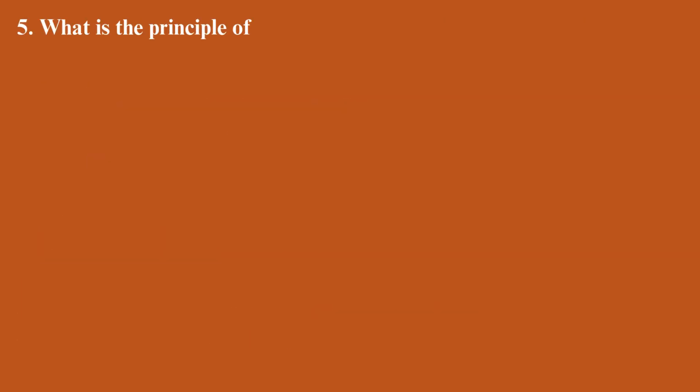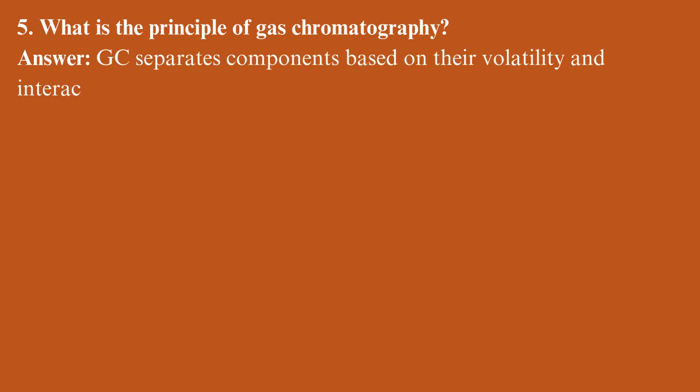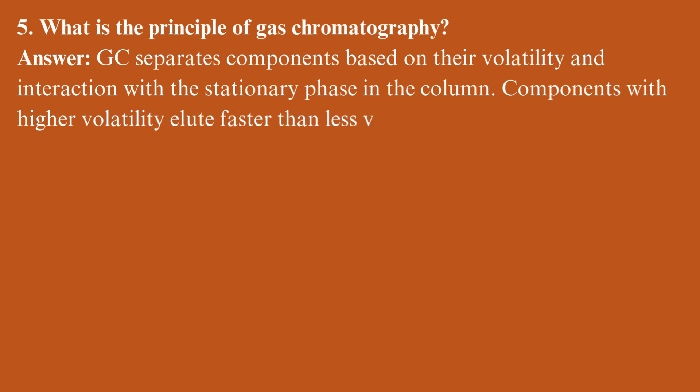What is the principle of gas chromatography? GC separates components based on their volatility and interaction with the stationary phase in the column. Components with higher volatility elute faster than less volatile compounds.